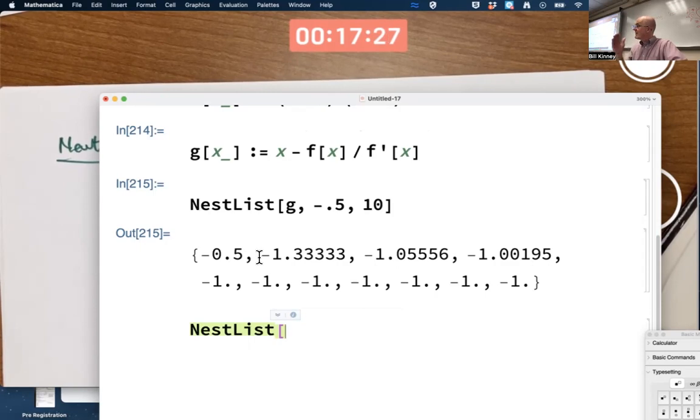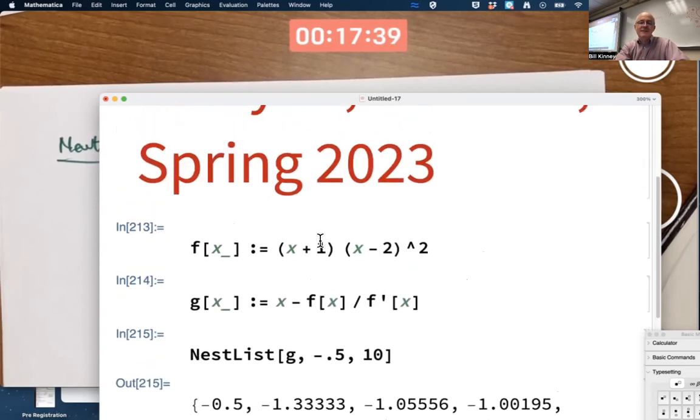Where f crosses the x-axis with a non-zero slope, actually g crosses the line y equals x with a zero slope. We talked about that, but if I try applying this to estimate the root of two...